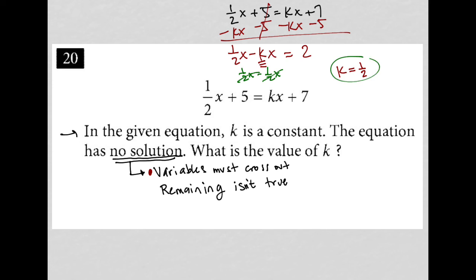So k equaling 1 half is the thing that's necessary. And you'll see that if k were 1 half, then this would become 0 equals 2. And that is not true. That is not a true statement. So that's how we would accomplish the second part. Your answer here is 1 half.